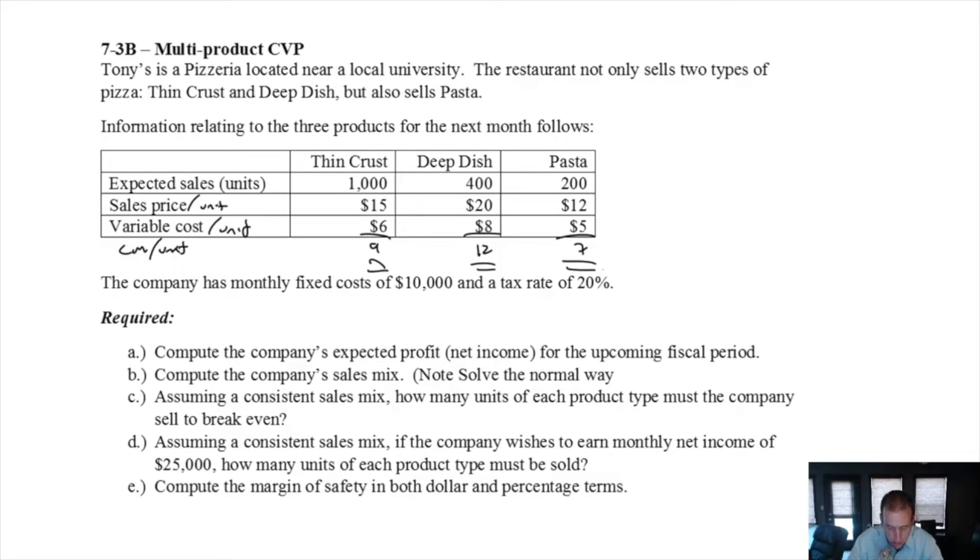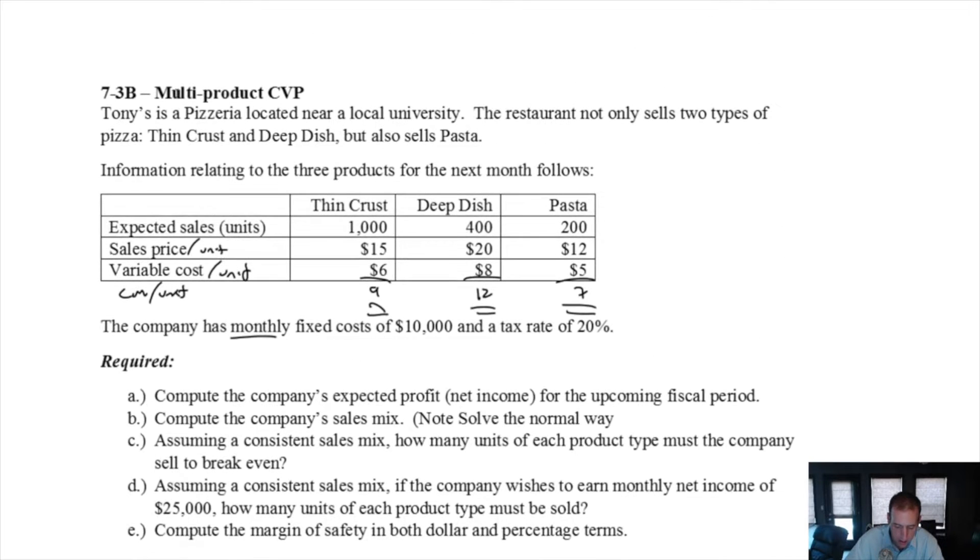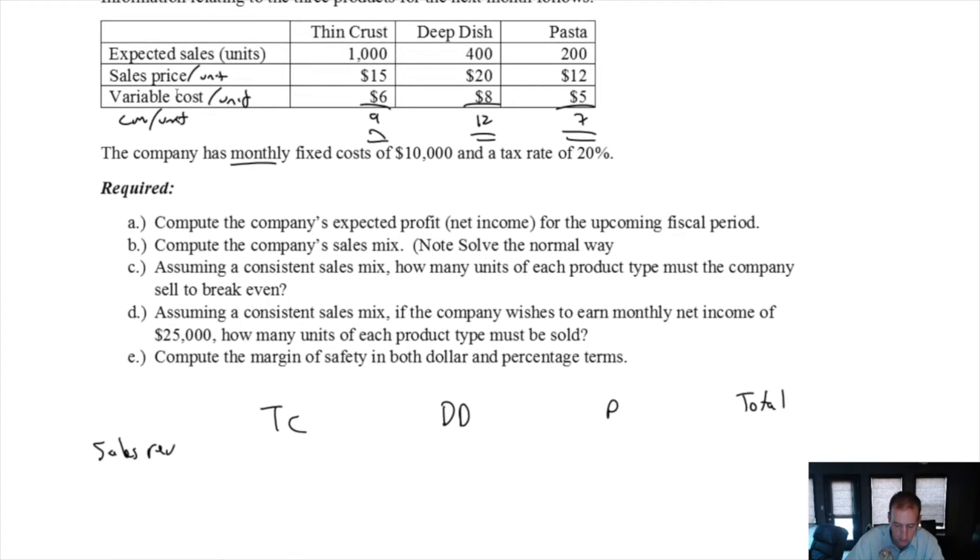It says compute the company's expected profit for the upcoming fiscal period, which is going to be a month. We got monthly fixed costs and expected sales in units for the month. We've got thin crust, deep dish, and pasta, and we'll do a total.